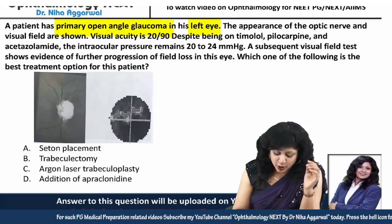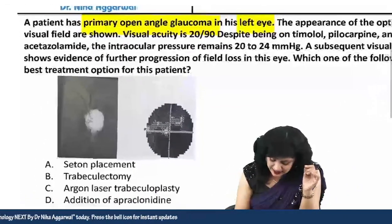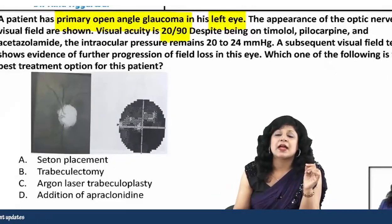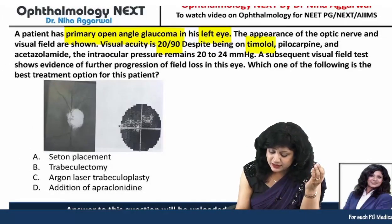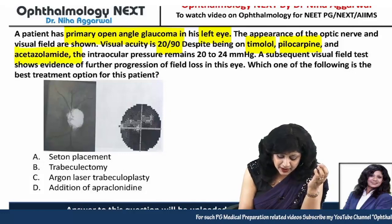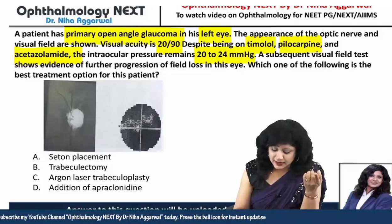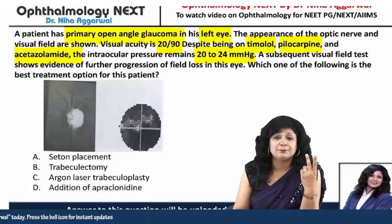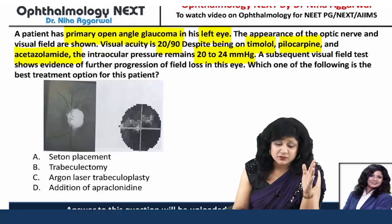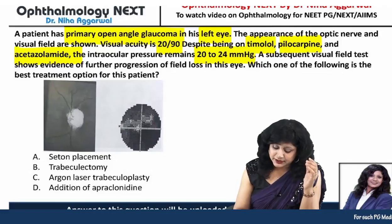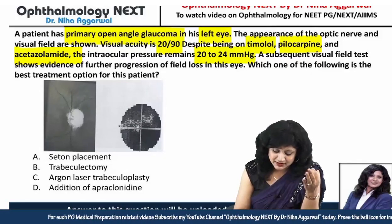The patient has primary open-angle glaucoma in the left eye. The appearance of the optic nerve and visual field are shown. Visual acuity is 20/90. Despite being on timolol, pilocarpine, and acetazolamide, intraocular pressure is 20 to 24 mmHg. The patient is a known case of POAG in the left eye, and vision is reduced.